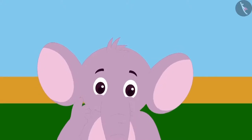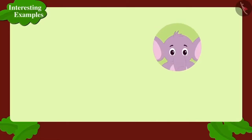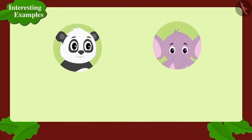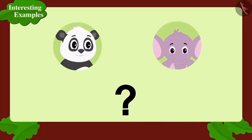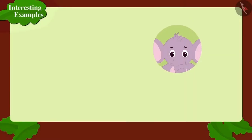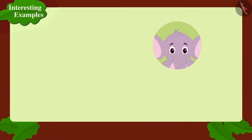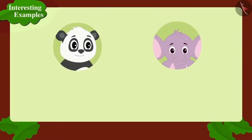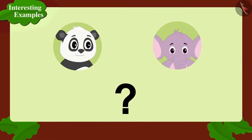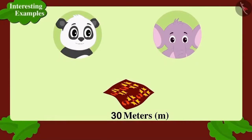On his way back home, Appu thought that he and his best friend Golu would get similar shirts stitched from the fabric. Appu is thinking how many meters of fabric he should give to Golu. Children, can you tell how Appu can find the answer to this question? Appu will have to divide that 30 meters of fabric into 2 equal parts.